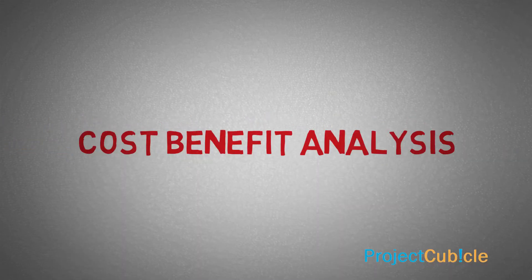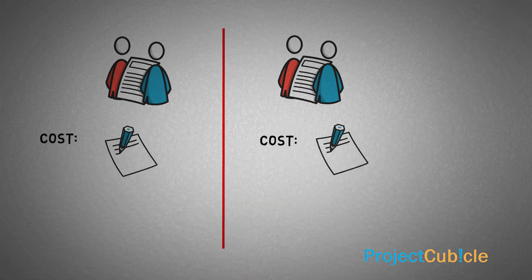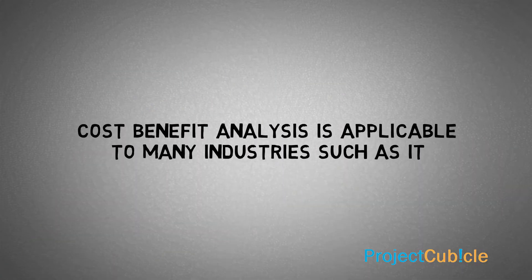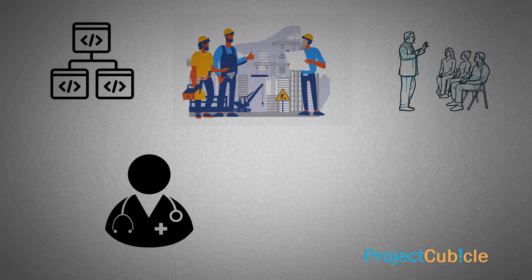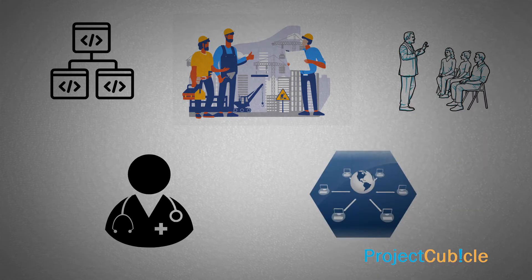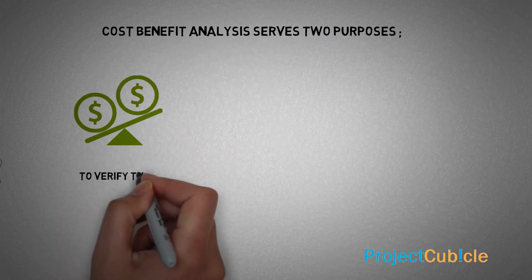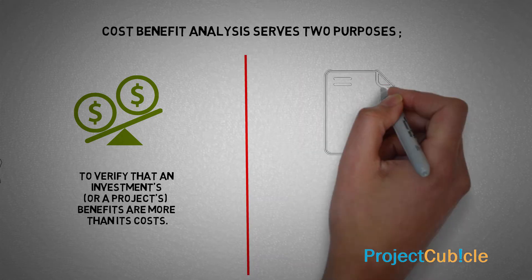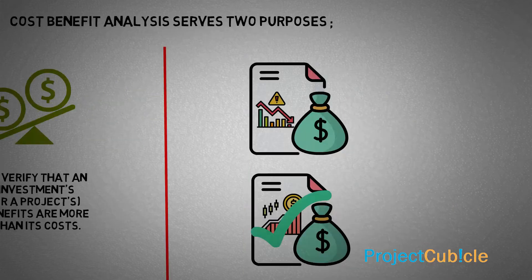Cost-benefit analysis is a mathematical approach to compare the costs and expected benefits of two or more projects or options. It is applicable to many industries such as construction, software development, education, healthcare, and information technology. It serves two purposes: to verify that a project's benefits are more than its costs, and to select a project by comparing the benefits-over-cost ratios.